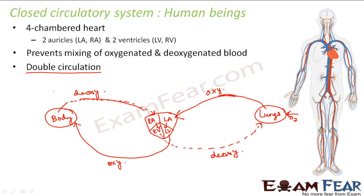Looking at the circulatory system in this diagram, by convention red lines denote oxygenated blood and blue lines denote deoxygenated blood. You can see that oxygenated blood comes from the lungs, goes to the heart, and from the heart it goes to different parts of the body — red lines are visible everywhere. Similarly, the blue lines start from different parts of the body, come to the heart, and are pumped back to the lungs. From the lungs the carbon dioxide will be expelled through the nostrils. This is how oxygenated and deoxygenated blood is circulated throughout the body of an organism.